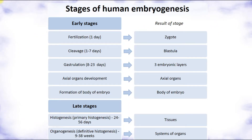The stages of human embryogenesis are divided into early stages and late stages. The first stage is fertilization on day one, resulting in a unicellular embryo. Next is cleavage during the first week, resulting in blastula. Then gastrulation results in the formation of three embryonic layers, followed by axial organ development and formation of the body of the embryo.